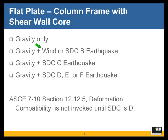Then, given a building as I described, and given that the design category is lower than D, our choice would be to take the wind or seismic forces through the flat plate column frames as part of the lateral force resisting system. If we choose to do that, the slabs will have to be designed for gravity and for wind or seismic forces. And this is something I want to illustrate.